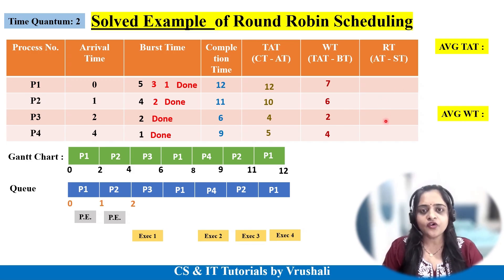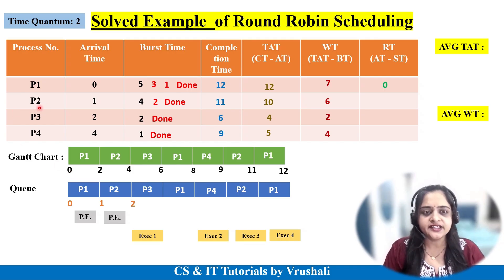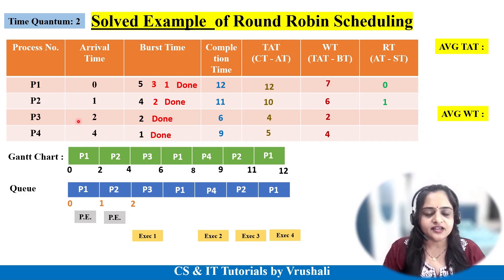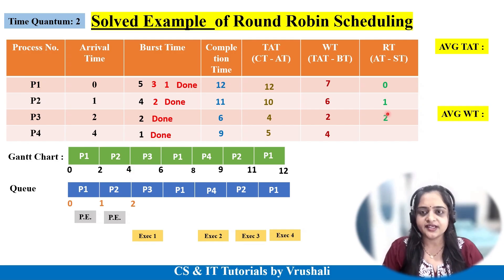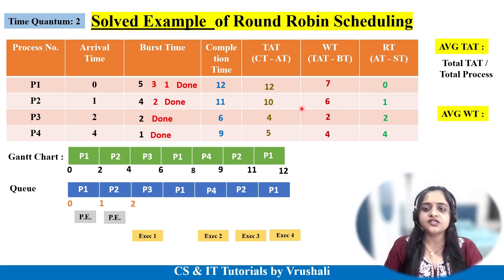Next is response time. The formula is start time minus arrival time. For P1: start time 0 minus arrival time 0 equals 0. For P2: start time 2 minus arrival time 1 equals 1. For P3: start time 4 minus arrival time 2 equals 2. For P4: start time 8 minus arrival time 4 equals 4.